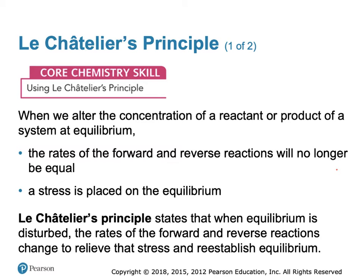In 1884, the French chemist and engineer Henry Louis Le Chatelier proposed one of the central concepts of chemical equilibria. His principle states: a change in one of the variables that describe a system at equilibrium produces a shift in the position of the equilibrium that counteracts the effect of this change. So when the system at equilibrium is stressed, the rate of the forward and reverse reaction will adjust to relieve this stress.